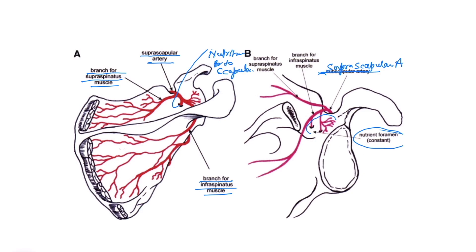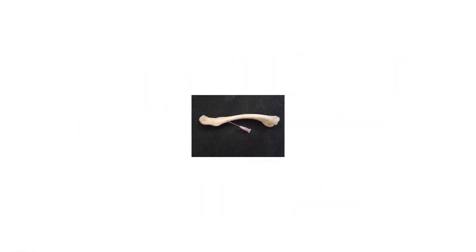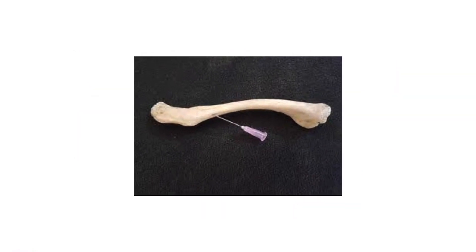You can see how the suprascapular artery gives out nutritional branches to the scapula. As it is not a long bone, there are many small nutritional branches perfusing the bulkiest portion of the bone, which is the glenoid process of the scapula. In its course, it also gives a nutritional branch to the clavicle. One important point often asked in exams is the direction of the nutritional foramen in the clavicle.